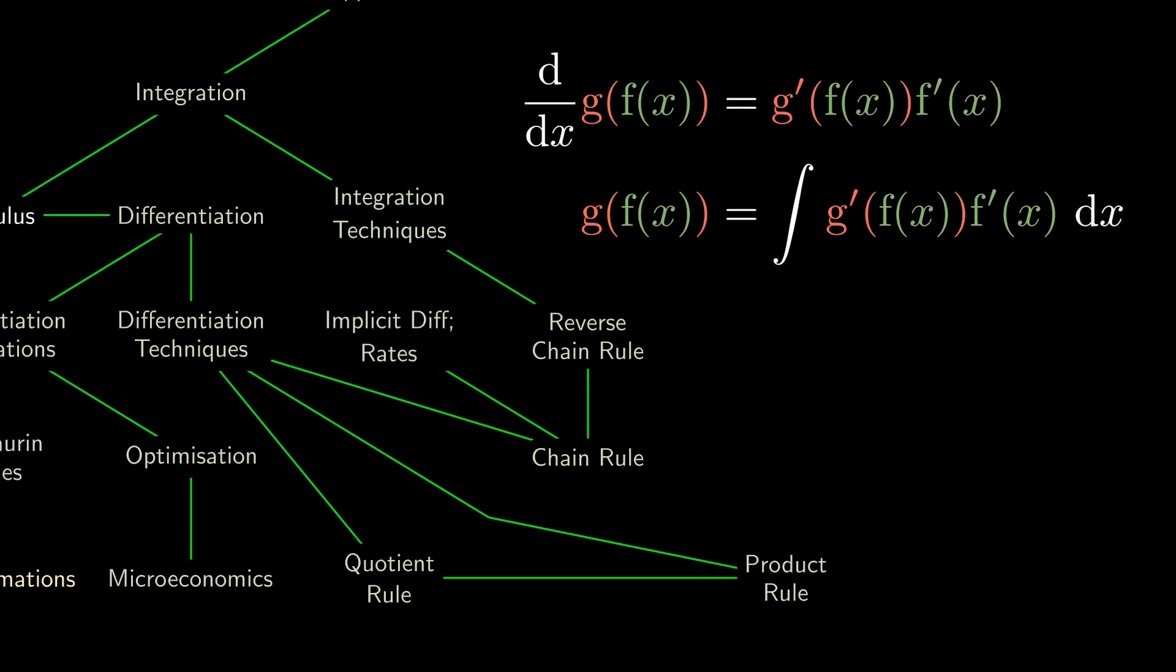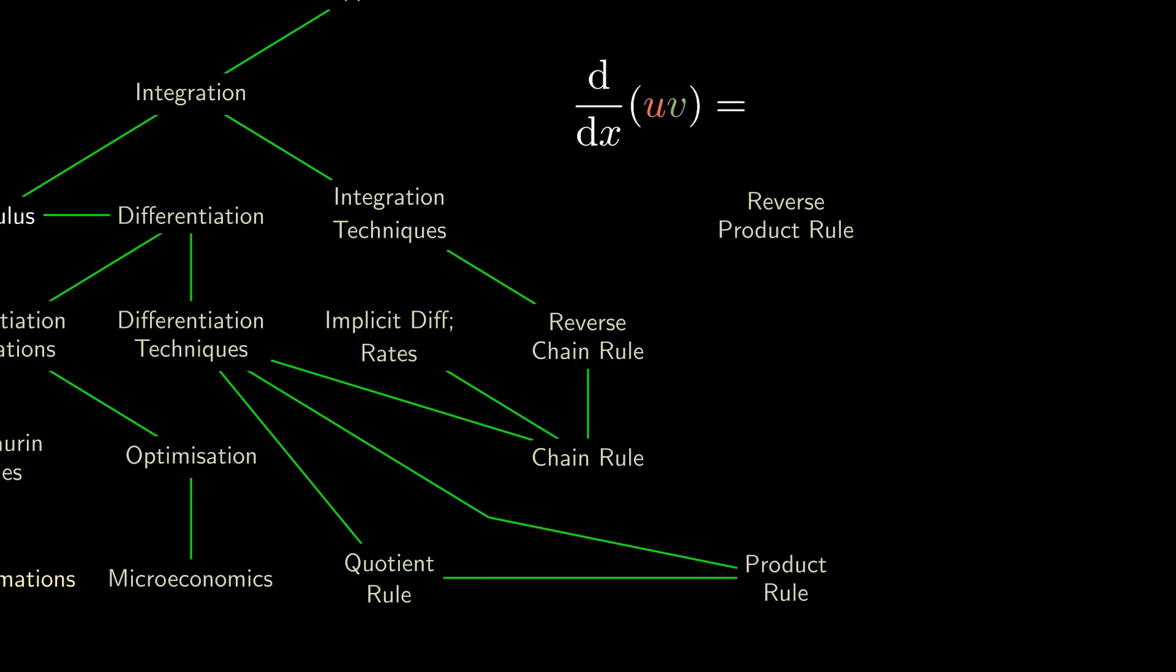We would also be interested in trying to reverse the product rule. So starting with the product rule, we can integrate on both sides and do a bit of algebra. The result is a formula more commonly known as integration by parts. I like to call this the ISID approach because the V' gets integrated while the U gets differentiated.